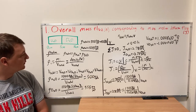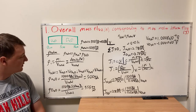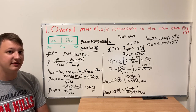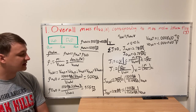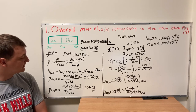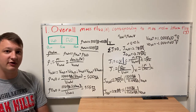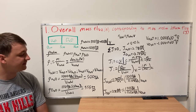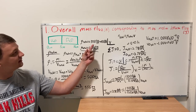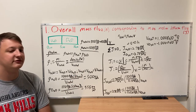We can substitute that into our mass concentration equation. For H2O we use density 1,000 kg/m³ times one-half V_total divided by V_total, giving us 500 kg/m³. For deuterated water we use density 1,110 kg/m³ times one-half, giving us 555 kg/m³. Plugging back in, our total mass concentration equals 500 + 555 = 1,055 kg/m³.